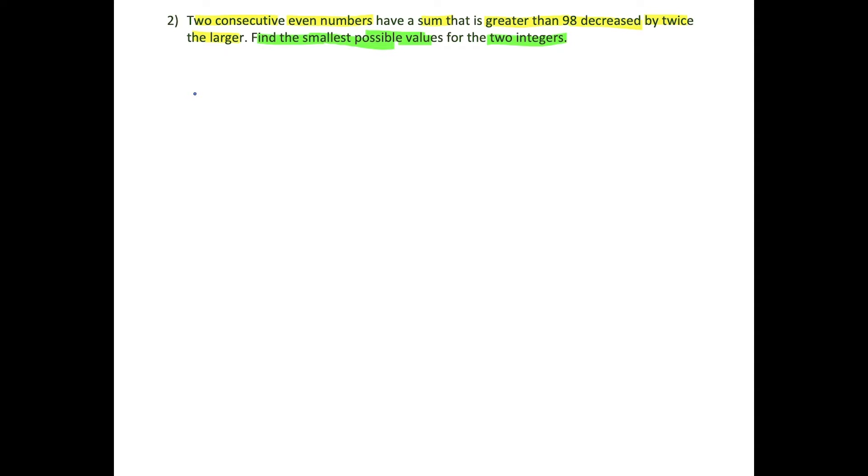We need to define some variables. Let x equal our first even number. Then for the next part here, if they are consecutive even numbers, this is what we have to think about. If I list a bunch of even numbers here, 2, 4, 6, 8, 10, the pattern to go from one even number to the next one, consecutive means the one right after, we're adding two. So that means if x equals our first even number, then x plus 2 is going to be our second even number.